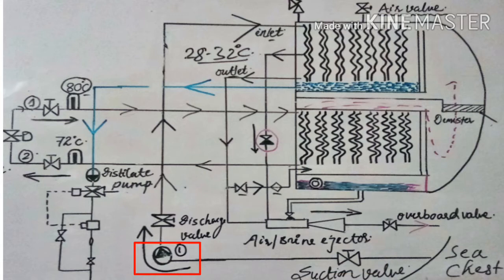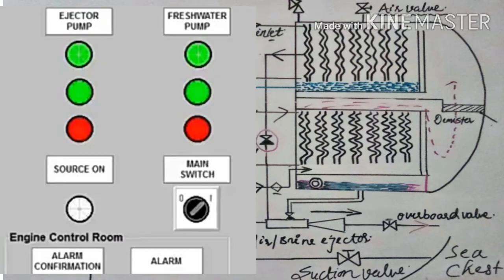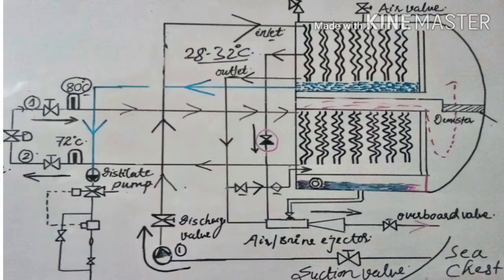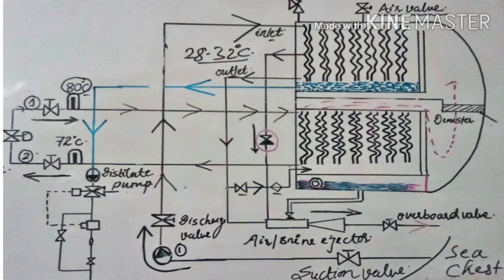To start the sea water pump, go to the operating panel, switch the main switchboard from 0 to 1 — that means the sea water pump is started. The question arises: we open the sea water suction valve and discharge valve to send sea water to the condenser, but why do we need to open this overboard valve?